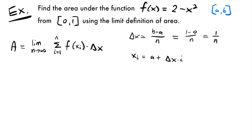So x_sub_i will equal a, which is 0, plus delta x (1/n) times i, giving us x_sub_i = i/n. Now that we've found delta x and x_sub_i, we can substitute those values into our formula.